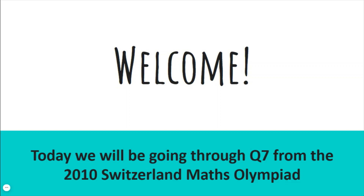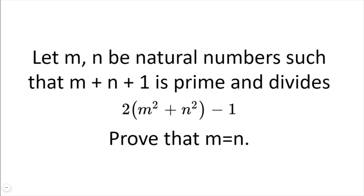Welcome. Today we'll be going through question 7 from the Switzerland Maths Olympiad, 2010. Let m and n be natural numbers such that m plus n plus 1 is prime and divides 2 multiplied by m squared plus n squared minus 1. Prove that m must be equal to n.